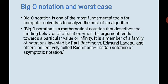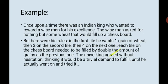Mathematically, Big O notation is a mathematical notation that describes the limiting behavior of a function when the argument tends towards a particular value or infinity. It is a member of a family of notations invented by Paul Bachmann, Edmund Landau, and others, collectively called Bachmann-Landau notation or asymptotic notation.